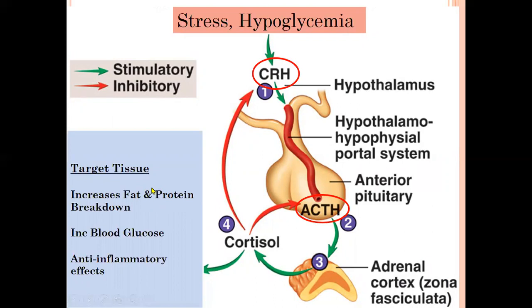Cortisol leads to different target tissue actions including increased fat and protein breakdown, increased blood glucose, and anti-inflammatory effects. If there is excess cortisol, this will directly act on the hypothalamus to produce less CRH and also on the pituitary to produce less ACTH — this is the negative feedback inhibitory mechanism.